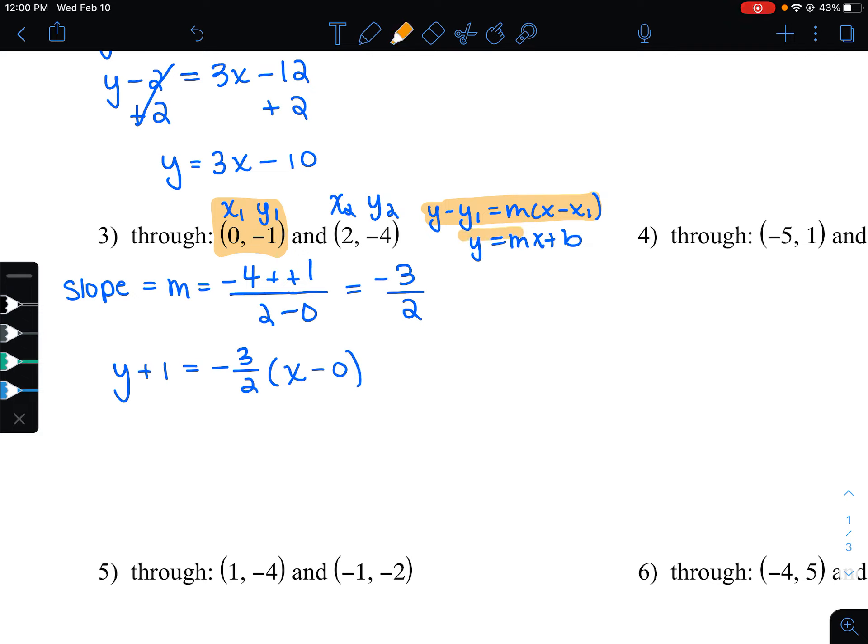Now, in order to write our final answer in slope-intercept form, I want to get rid of the parentheses. So I'm going to distribute. Nothing changes on the left side. And we should have negative 3 over 2, x. And then negative 3 over 2 times 0 is 0. So I'm not going to write anything there. And then if I want to get rid of this plus 1 here, I'll subtract 1 from both sides. So I'd have y equals negative 3 over 2, x minus 1. And that is our equation in slope-intercept form.